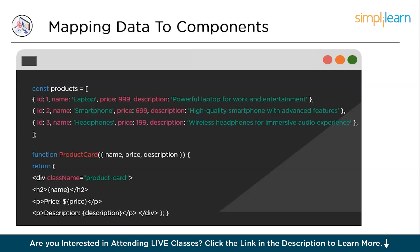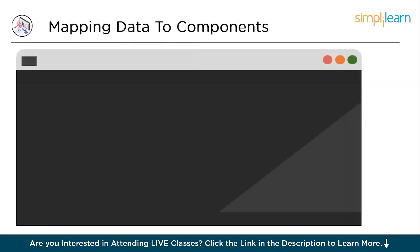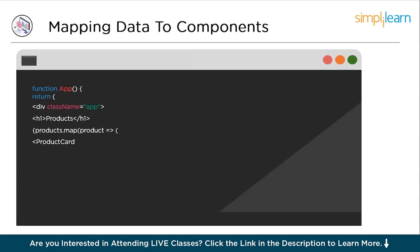Once the map function has gone through all the products, we end up with a whole bunch of product card components, each tailored to a specific product. Think of it like having a stack of cards each showing a different product. When we render our app component, it's like laying out all those cards on a table. The beauty of this approach is that we don't have to manually create a card for each product — the map function does all the heavy lifting, making our code more efficient and allowing us to easily handle large sets of data. It's a smart and scalable way to display information on a webpage.